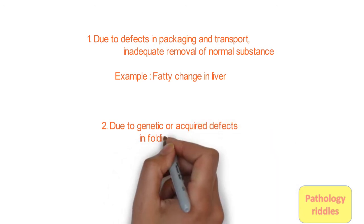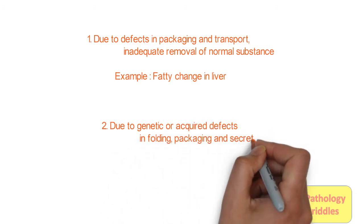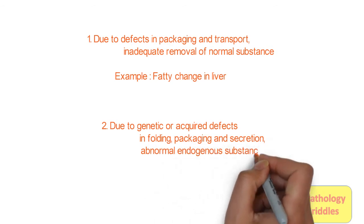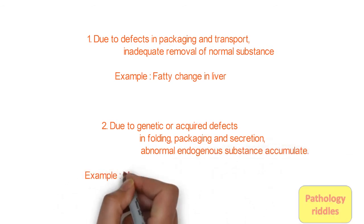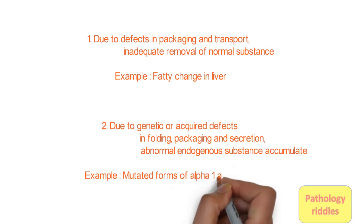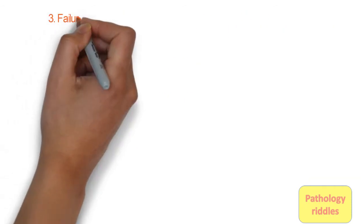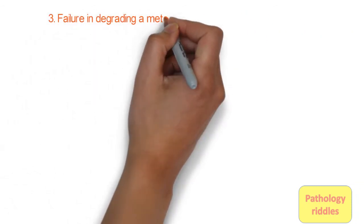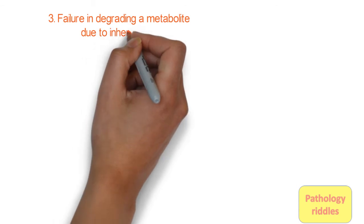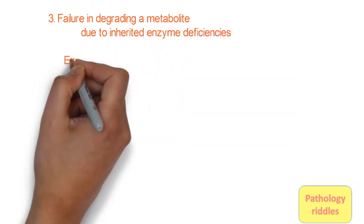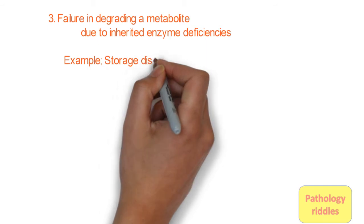Mechanism 2: Due to genetic or acquired defects in folding, packaging, and secretion, abnormal endogenous substances accumulate. For example, mutated forms of alpha-1 antitrypsin. Mechanism 3: Failure in degrading a metabolite due to inherited enzyme deficiencies results in accumulation of the metabolite within. For example, storage disease.